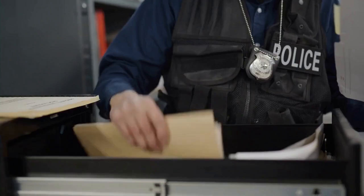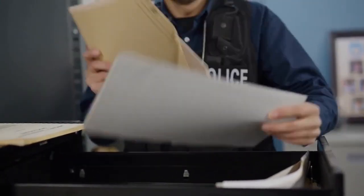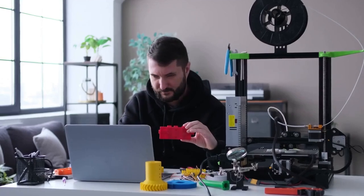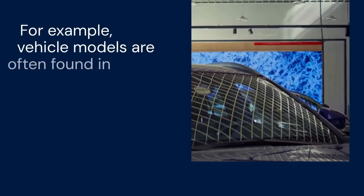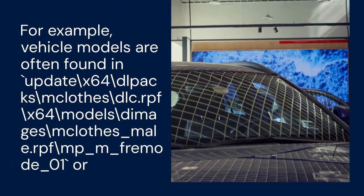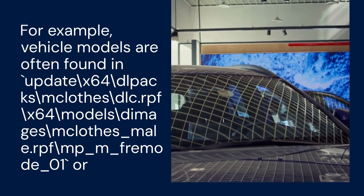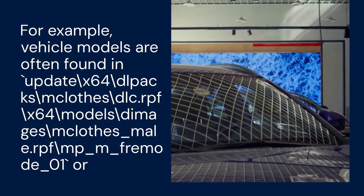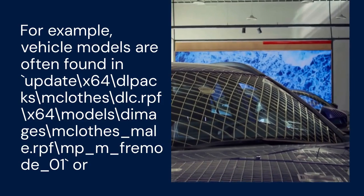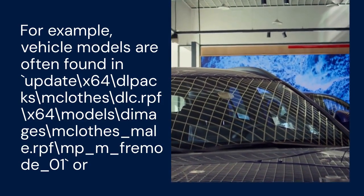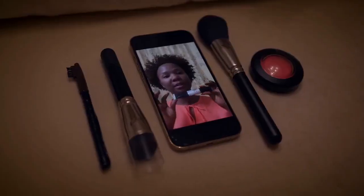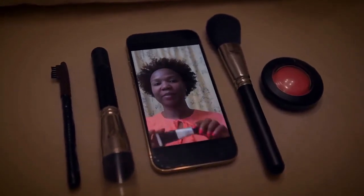Once you have these tools, locate the .yft file you want to import. These files are usually found within the .rpf archives in your Grand Theft Auto 5 directory. Use OpenIV to navigate these archives. For example, vehicle models are often found in update.rpf. Extract the desired .yft file to a folder on your computer.